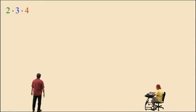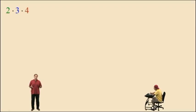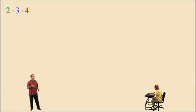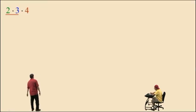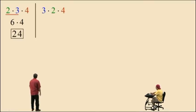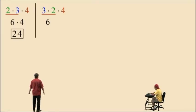Let's look at 2 times 3 times 4. We can apply both the associative and commutative properties to this problem, which means we can arrange the numbers in any order as long as they're all being multiplied together. If we multiply the first two first: 2 times 3 is 6, times 4 is 24. Now let's apply the commutative property to the first two and rearrange it as 3 times 2: that's still 6, times 4 is 24 — same answer.